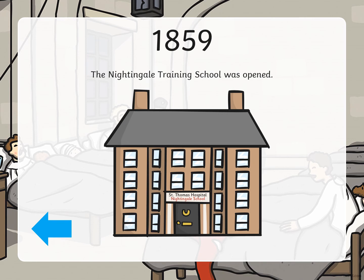In 1859, the Nightingale Training School was opened. In this school, people didn't learn the alphabet or how to read or write — can you think about what they learned? They trained how to become nurses; they learned how to become nurses.